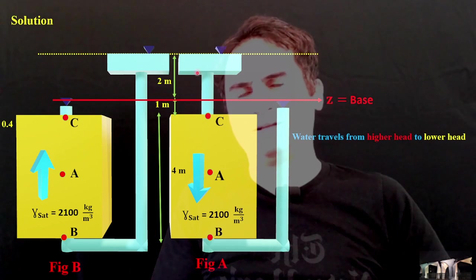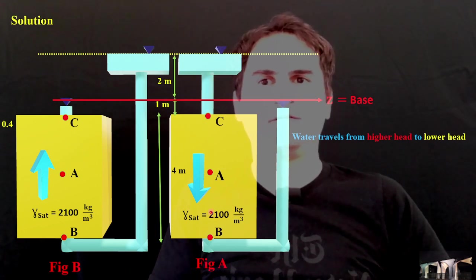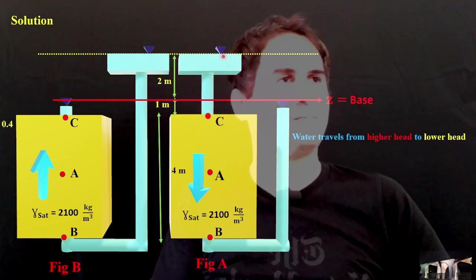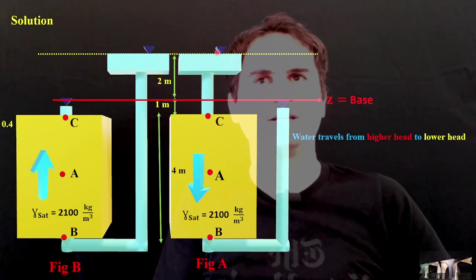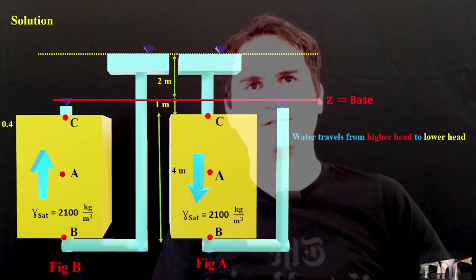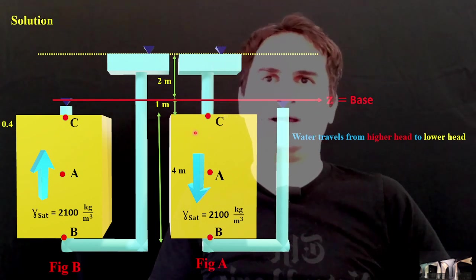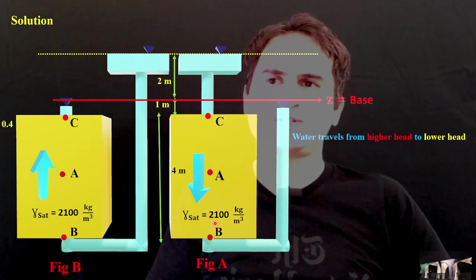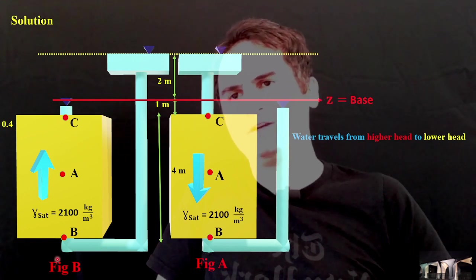By looking at the figure in figure A, we can see by just eye investigation, this is the higher head and this is the lower head. This is our Z, which is our base, Z equal to zero. And for this one, it's just the downward seepage.